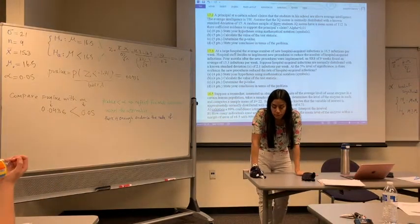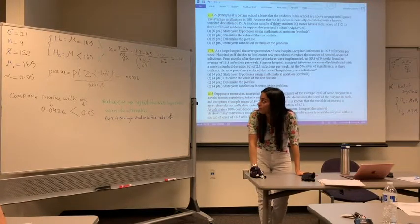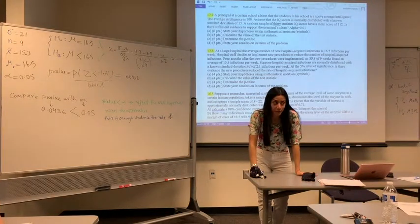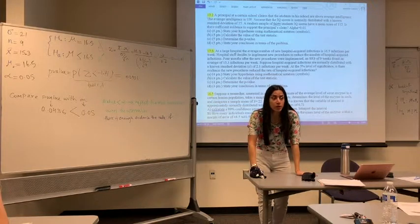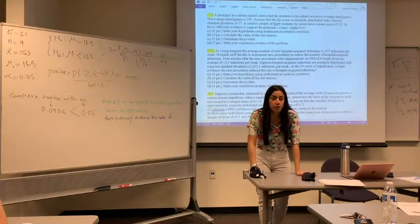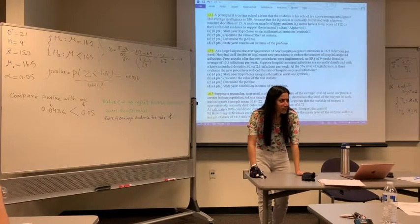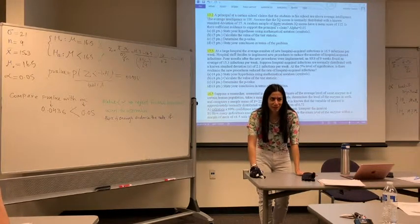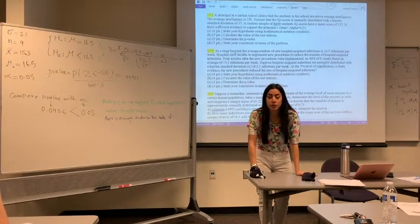If you follow all the steps correctly, arrive at the correct p-value, and correctly determine whether it is less than or greater than alpha, writing a brief conclusion — rejecting or not rejecting — will earn full credit. However, if you didn't follow all the steps and something is wrong, an incomplete answer means I cannot guarantee you receive all the credit.